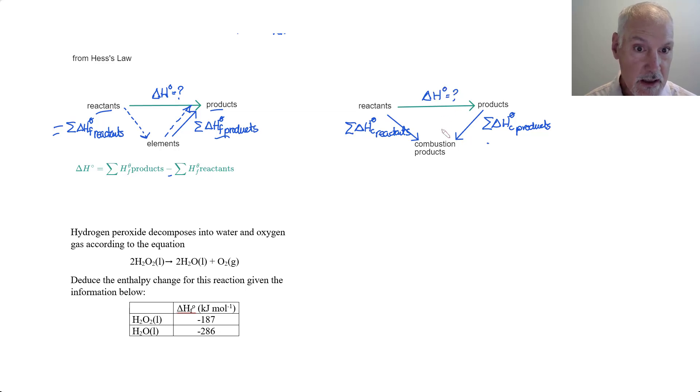Employing Hess's law, we want the enthalpy change for this reaction. We can arrive in the same position by going this way followed by this way. If I go in the other direction, this becomes the negative of the products. The enthalpy change for reaction is reactants minus products. When dealing with combustion it's reactants minus products, but with formation equations it's products minus reactants.